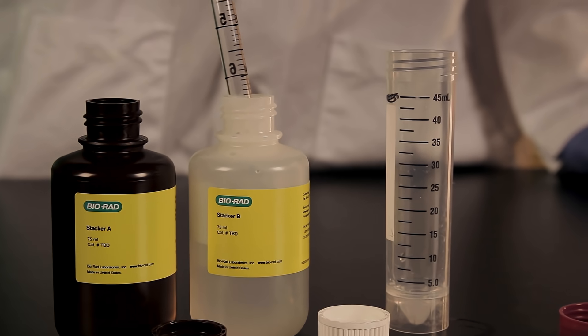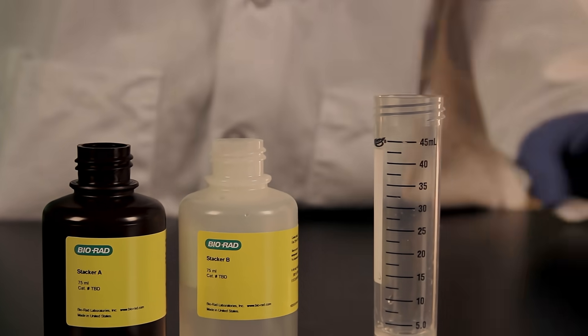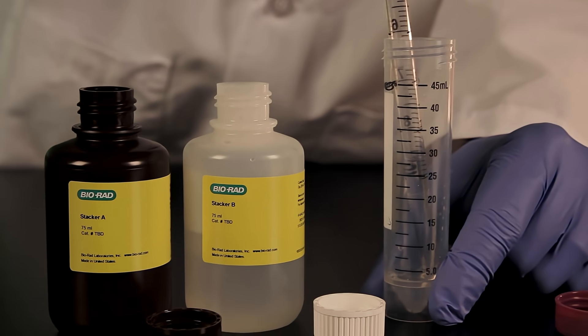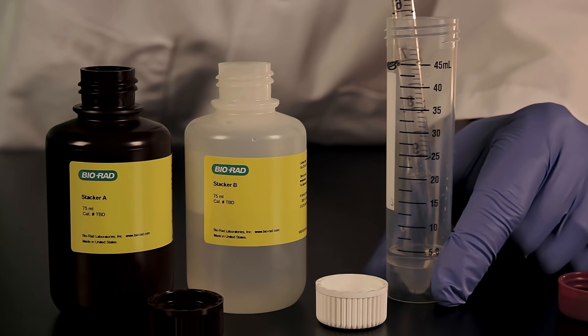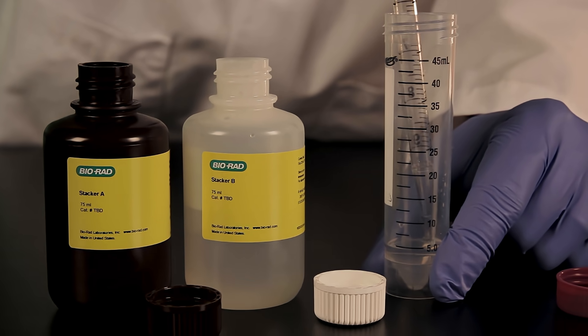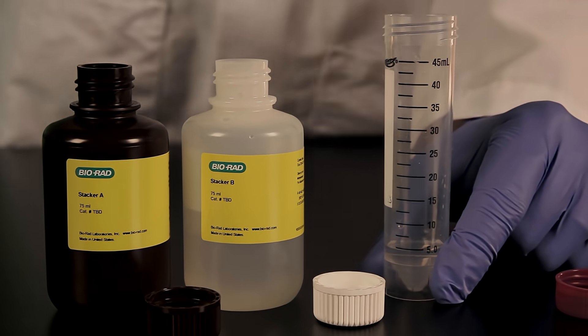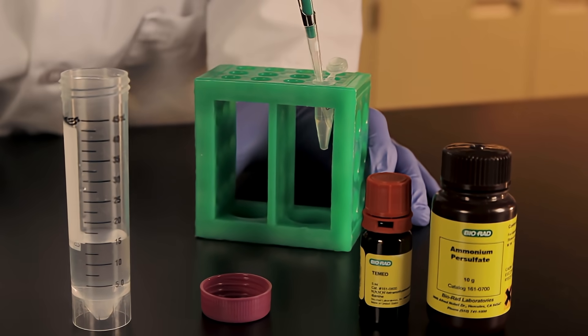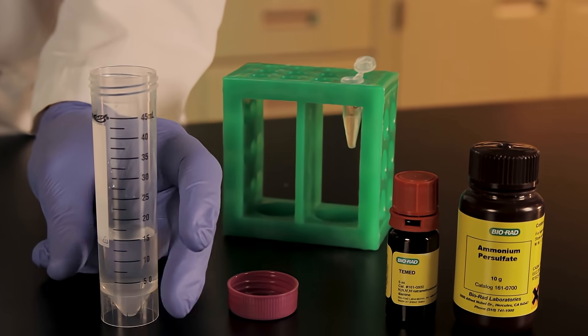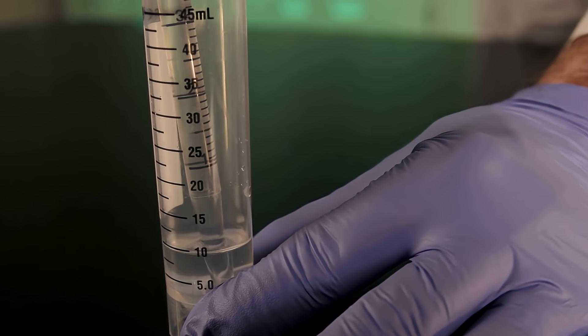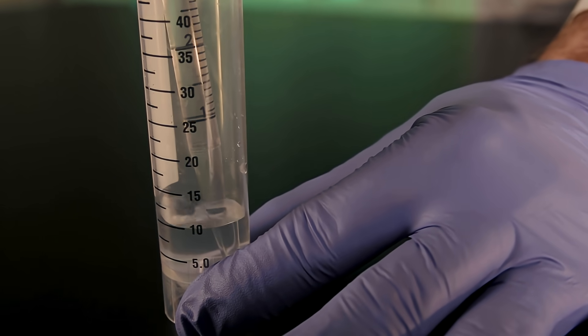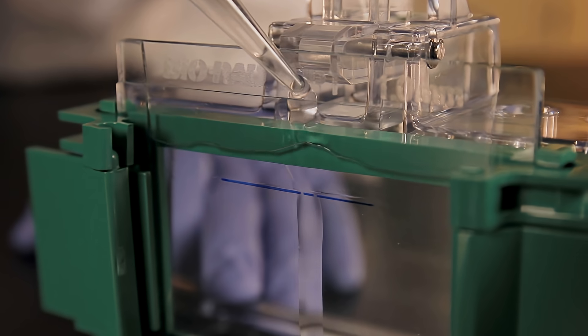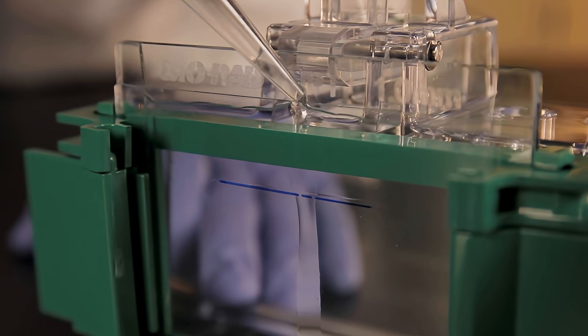For fastest results, the stacker can be poured without waiting for the resolving gel to polymerize. Prepare the stacking gel acrylamide solution by combining equal volumes of stacker A and B. Add the appropriate volumes of TEMED and freshly made 10% APS to the combined stacking solution and mix thoroughly, again taking care to avoid introducing air bubbles. Pour the solution slowly down the middle, completely filling the cassette.